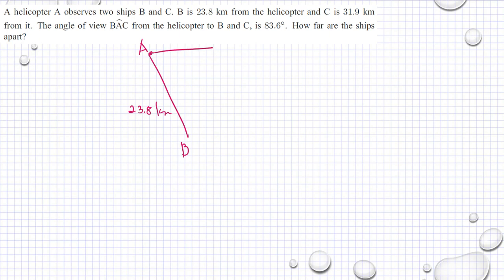And C is 31.9 kilometers from it. The angle of view BAC, this is our A, BAC this one, is 83.6 degrees. It should be a bigger angle, almost 90 degrees. How far are the ships apart? BC, let's say we have our A, that is what we're going to solve.